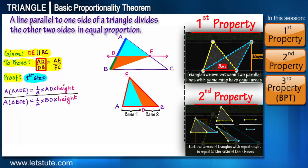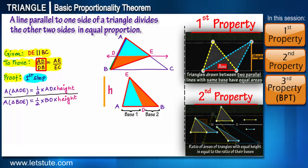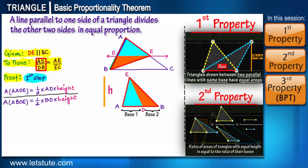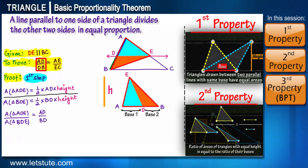These two triangles are formed within the larger triangle ABE. By using our second property, the height for both triangles is the same, so the ratio of areas can be written as: area of triangle ADE upon area of triangle BDE equals AD upon BD, by cancelling the constant one-half and the equal height.